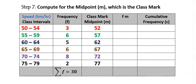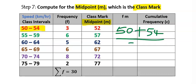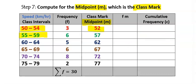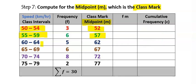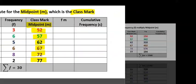Step number seven: compute the midpoint, also known as the class mark. For the first class, 50 plus 54 divided by 2 gives 52. For 55–59: 57. Apply the same formula to obtain the midpoints for each subsequent class interval.